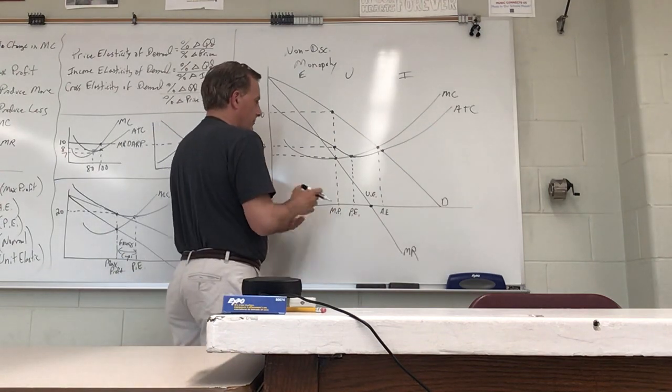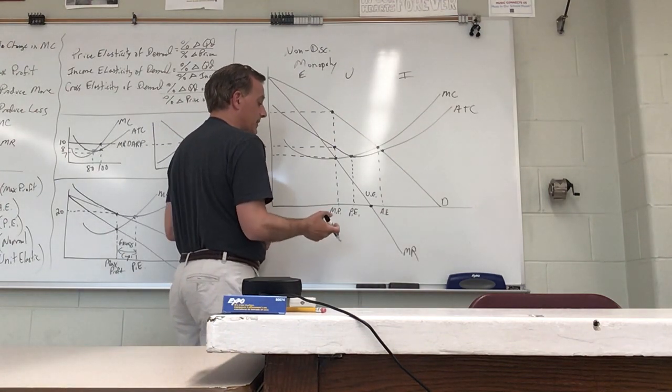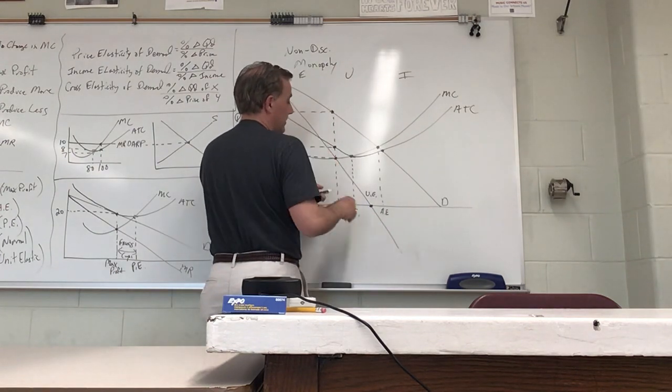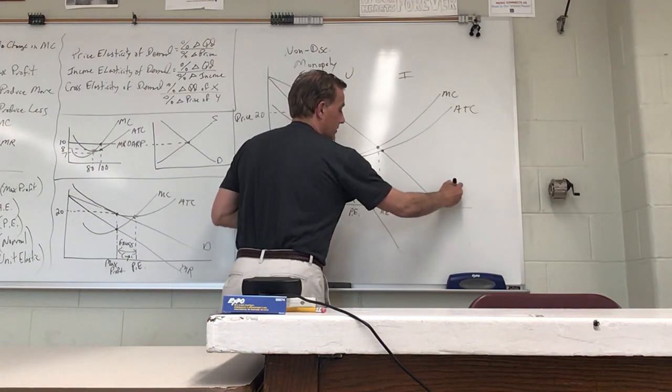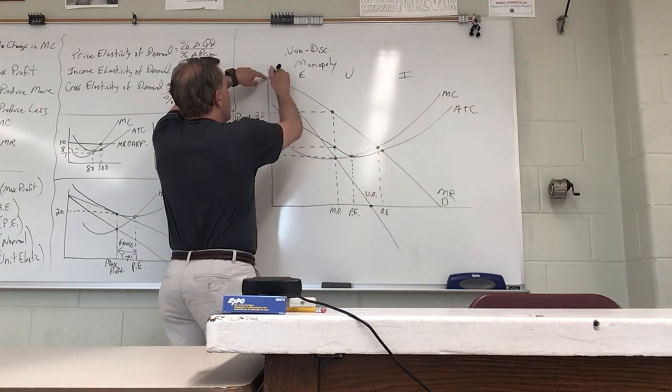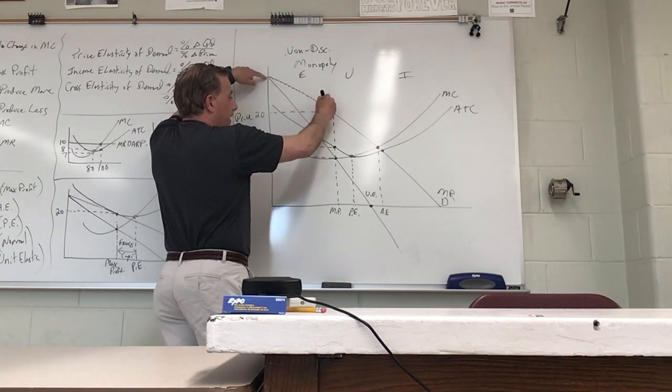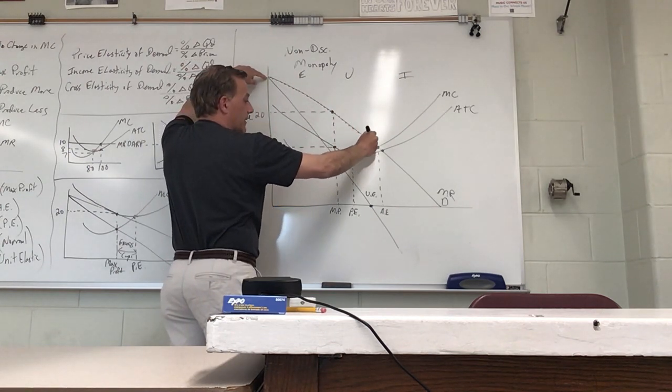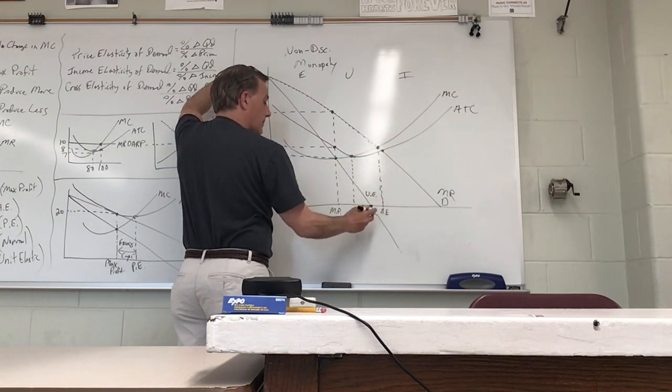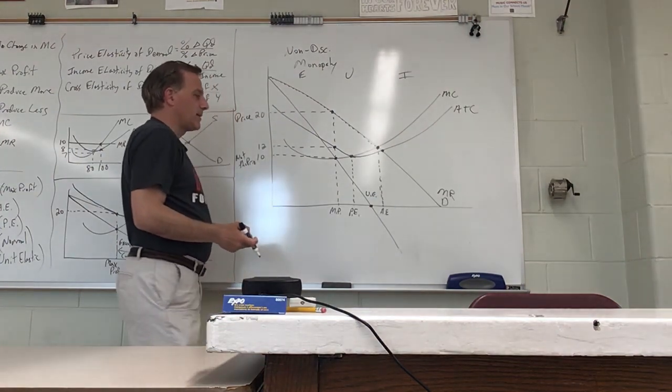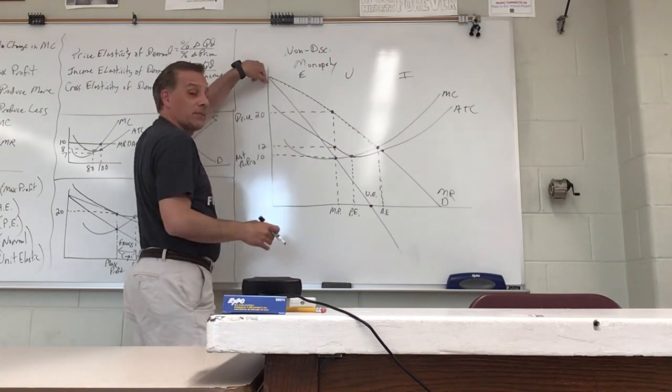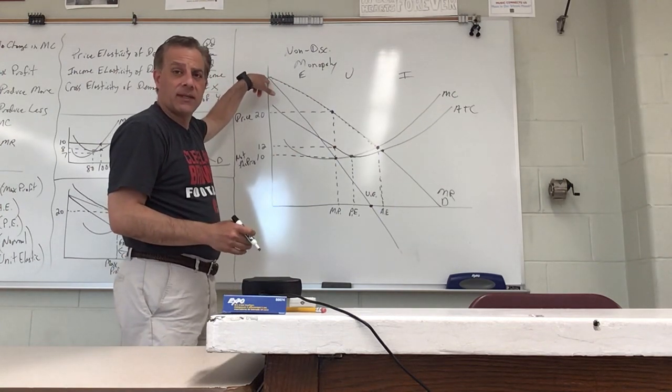If and only if this becomes a discriminating monopoly, pretend like this marginal revenue curve doesn't exist. Where MR equals MC is all the way over here. Every person in a discriminating monopoly pays what they're willing and able to pay - think college tuition - until MR equals MC. Now they're producing all the way to the allocatively efficient quantity, but there is no consumer surplus anymore because consumers are paying what they're willing and able to pay.